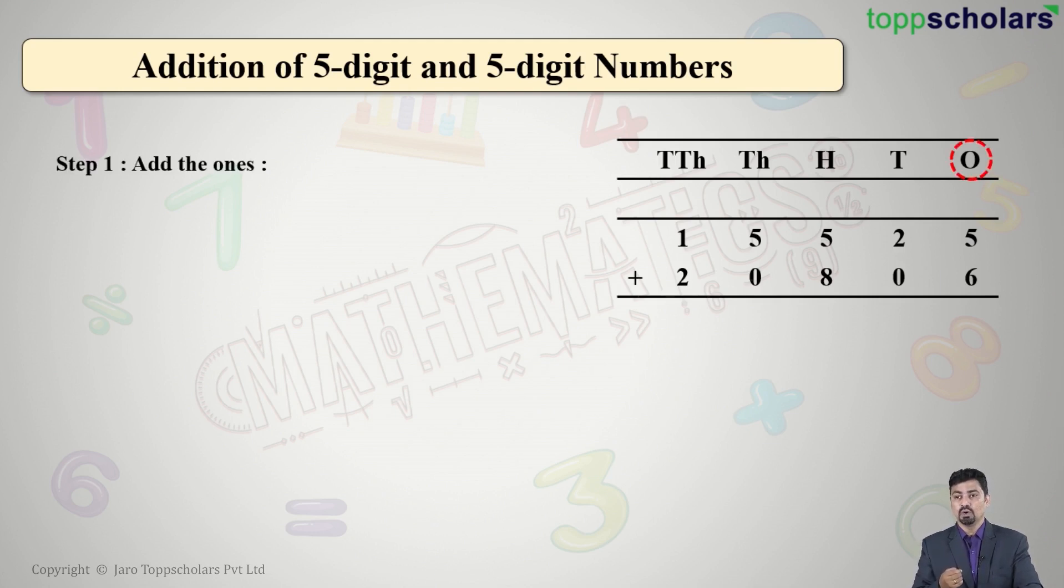We'll be adding 5 + 6. Our answer is 11. How do we write 11 in the ones place? We regroup the ones as 1 ten and 1 one, because 11 has 1 in ones place and 1 in tens place. We write 1 in the ones column and carry the 1 ten forward to the tens column.